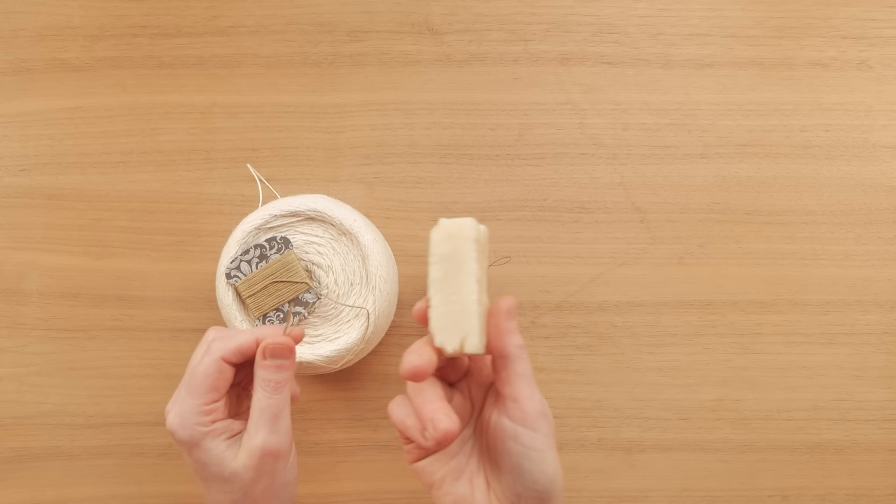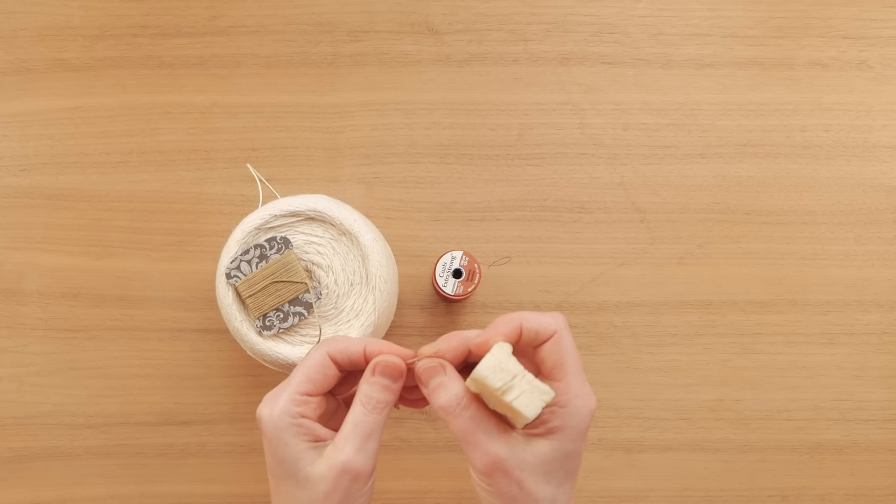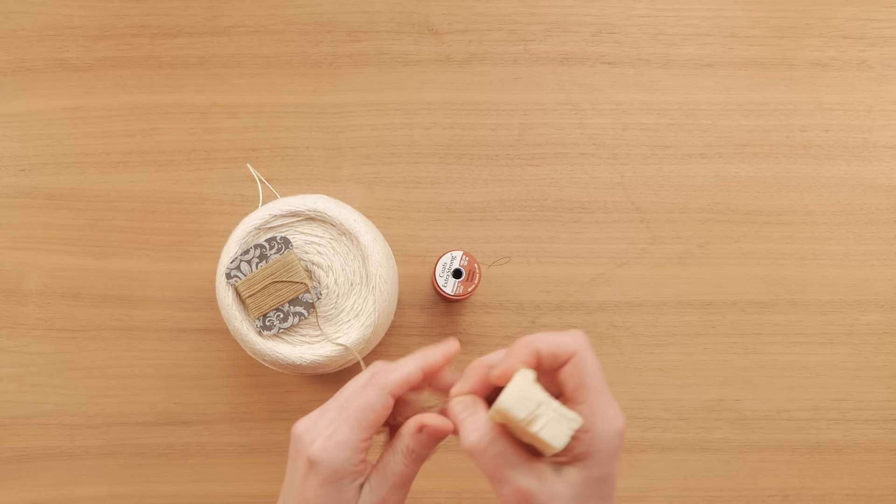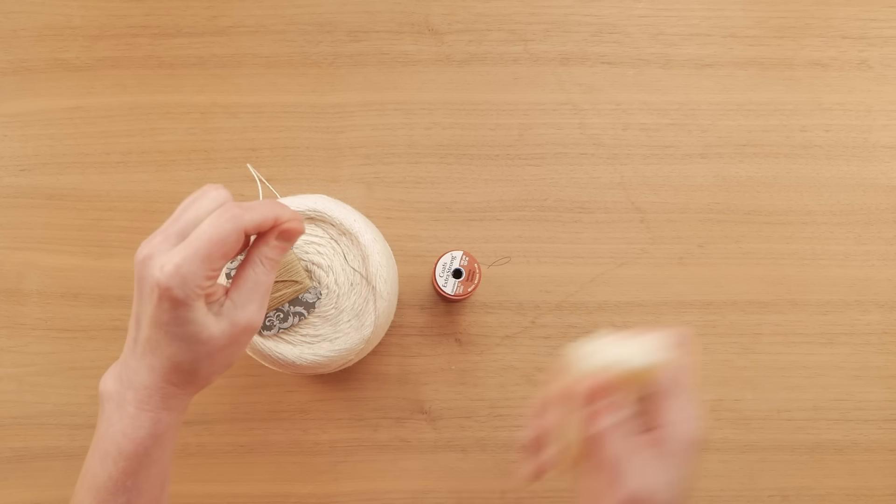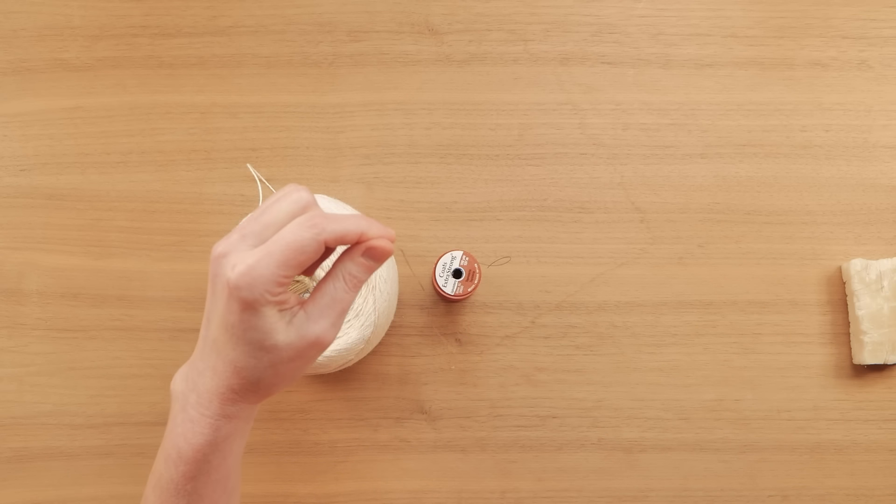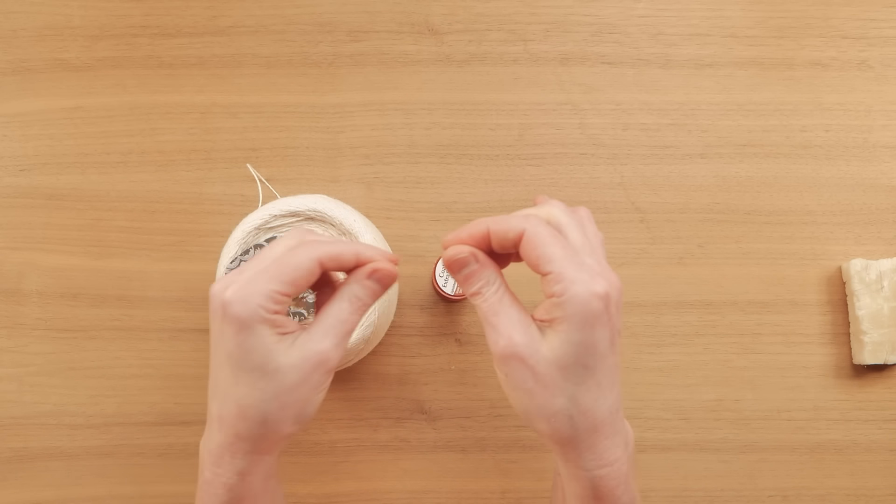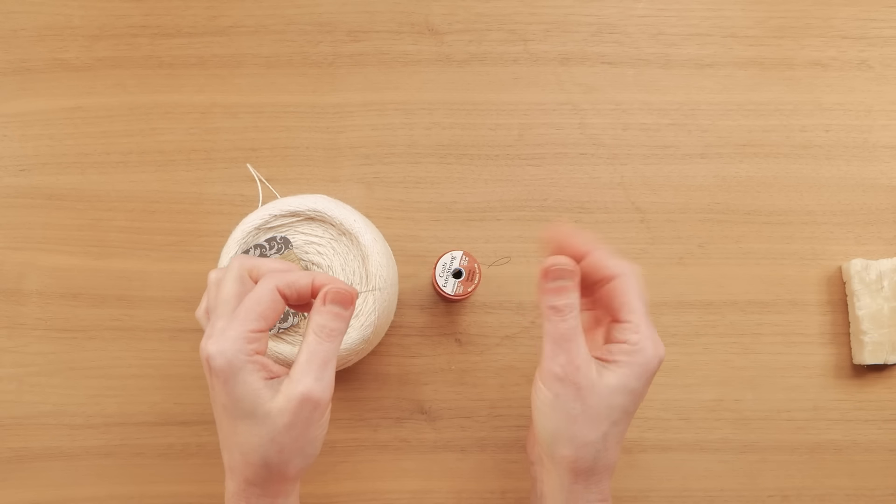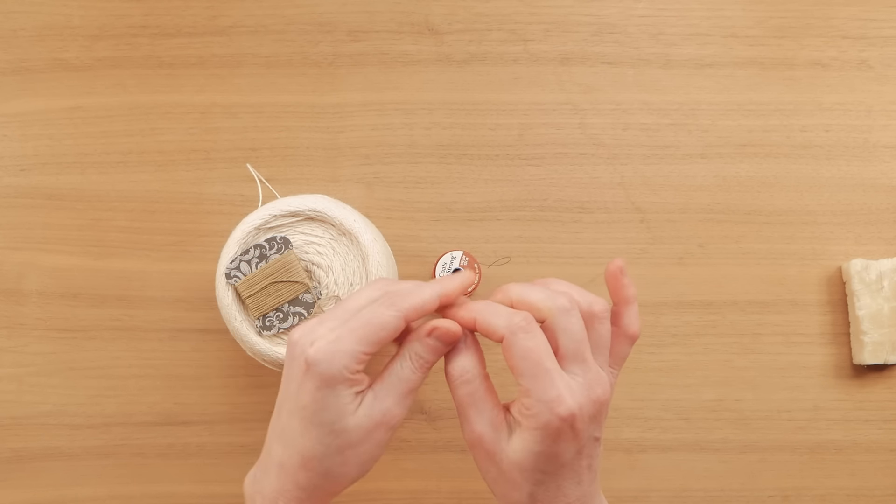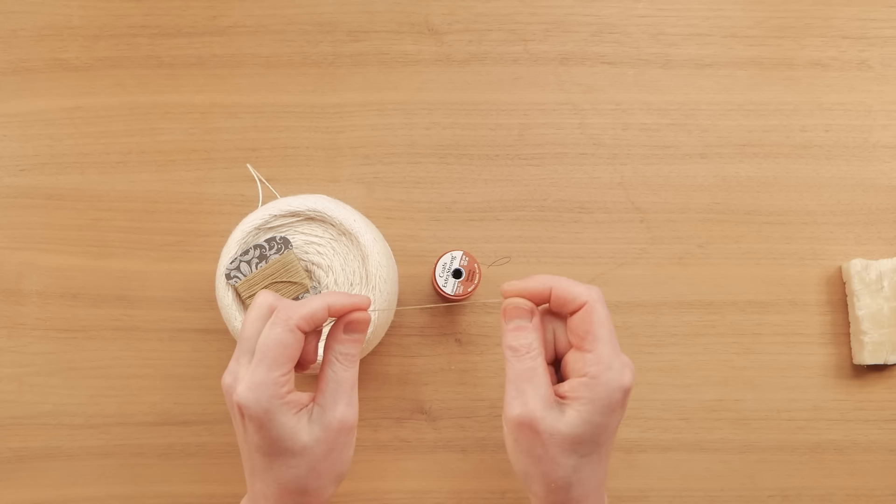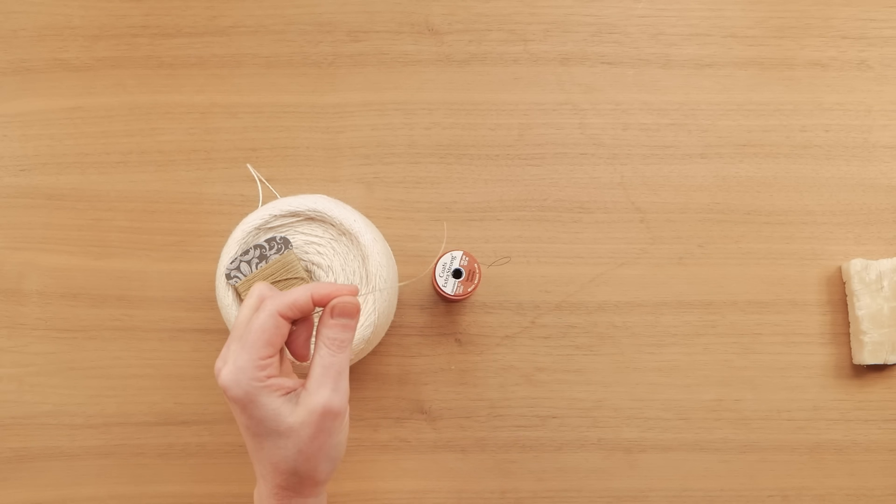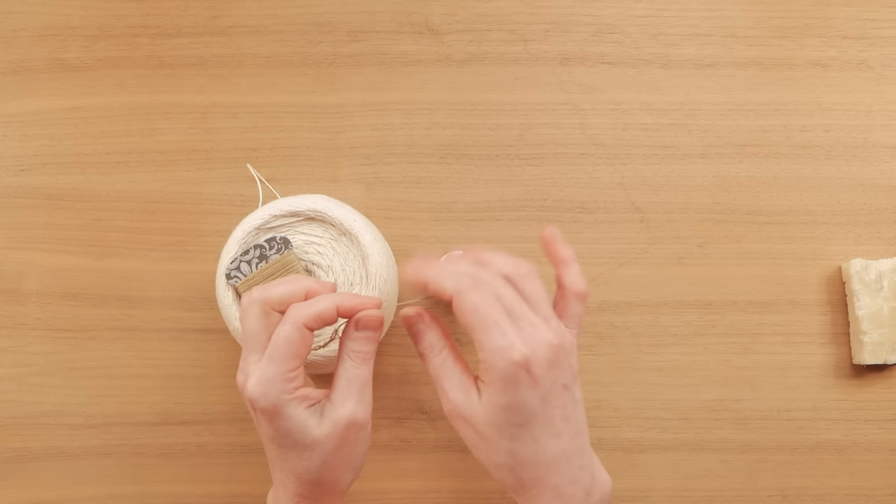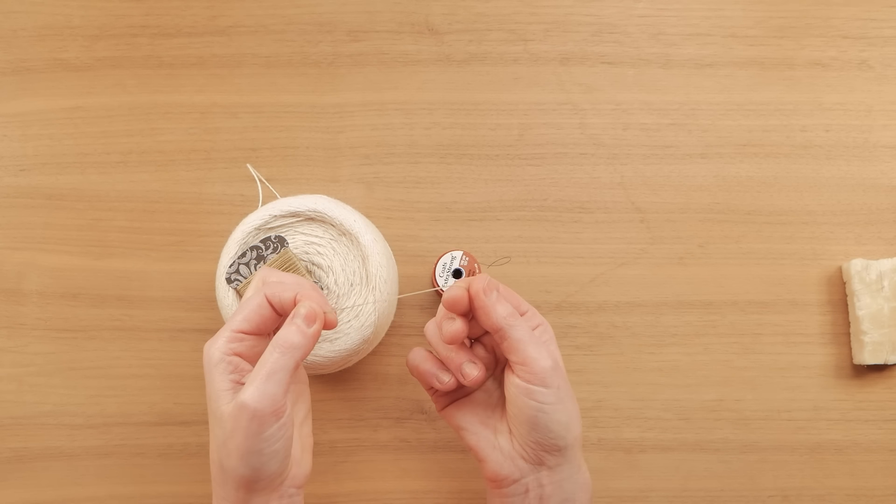If you take some beeswax and after you separate out let's say three of these strands, you can run it through this beeswax and not only does that help your strands stick together into one but it also acts a lot like that waxed linen thread and the cotton fibers will lay flat now and they won't be catching on your paper as you sew your signatures together.